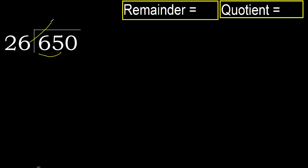26 multiplied by which number is nearest to 65, but not greater? 26 multiplied by 3 is greater. 26 multiplied by 2 is 52, which is not greater. Subtract: 13.